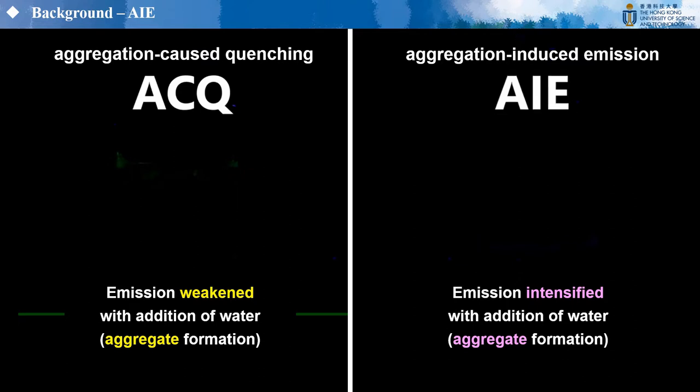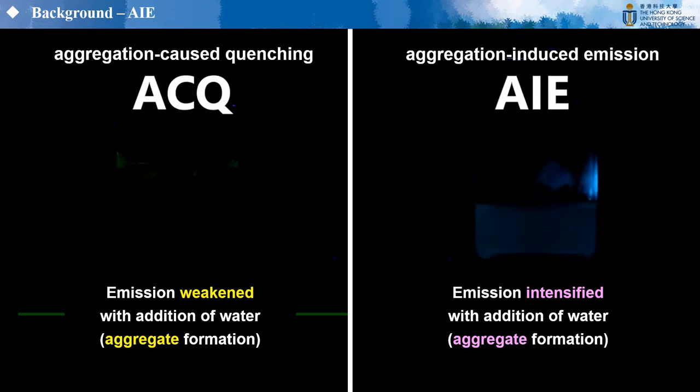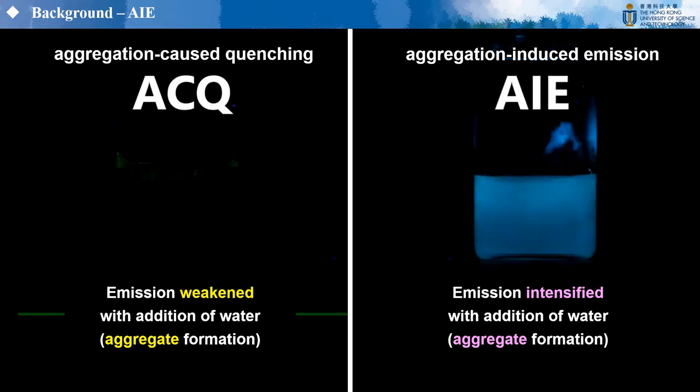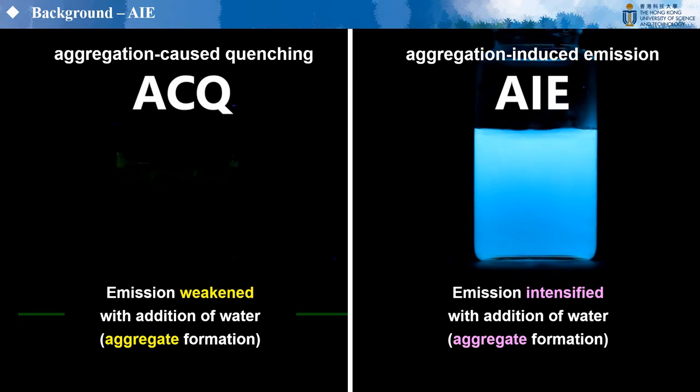In 2001, the concept of aggregation-induced emission (AIE) was coined, which refers to an opposite photophysical phenomenon where luminogens can strongly emit in the aggregate state.